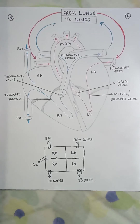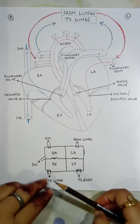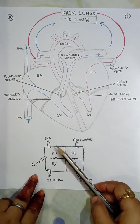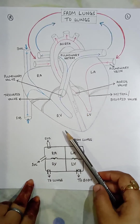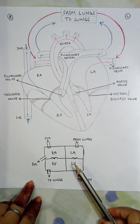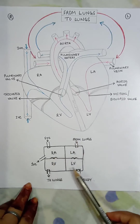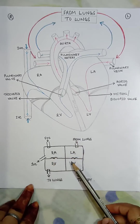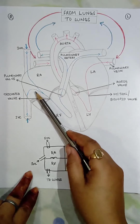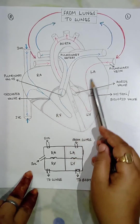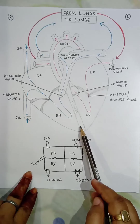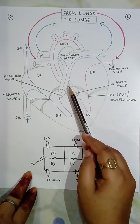Now coming to the diagram, I have drawn two types: a diagrammatic representation as seen in books, and a simplified version to understand how the heart functions. We can see the right atrium, left atrium, right ventricle, and left ventricle. The septum divides the left side and the right side of the heart.